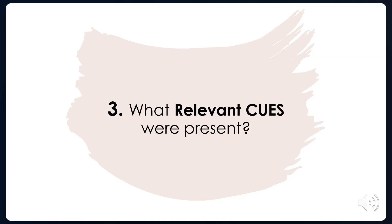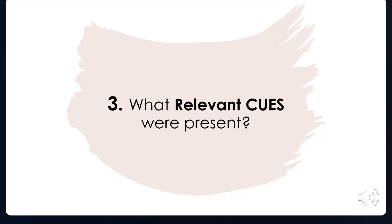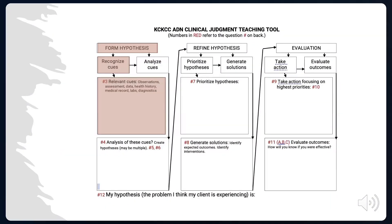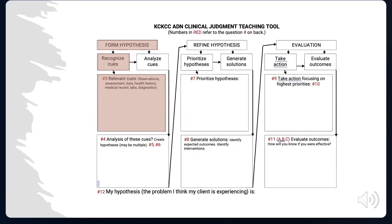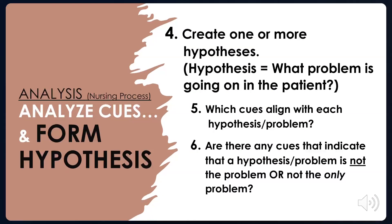A helpful hint: being cold with chills in a 76-degree hospital room is a relevant cue. However, being cold with chills standing in the snow is not a relevant cue — it's expected, it's normal. So any deviation from the norm is a relevant cue we need to look at. And now we've taken the first big chunk of the clinical judgment model.